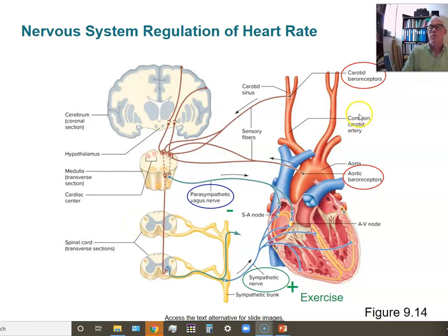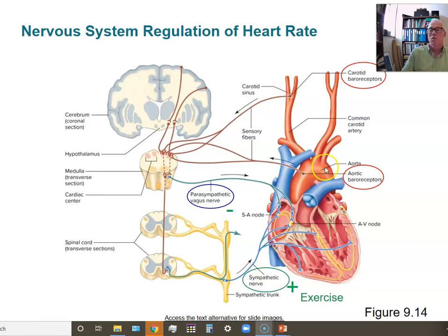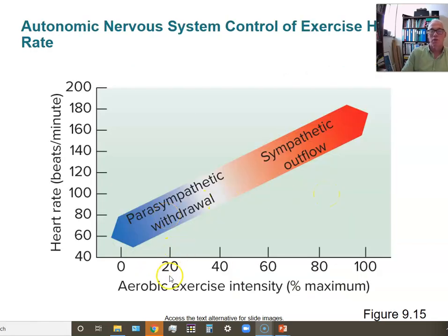There are also pressure receptors to note. In the carotid arteries in your neck, at the fork where they split, there is a pressure sensor called a baroreceptor — analogous to a barometer. This is the carotid sinus. There are also aortic arch baroreceptors in your aorta. These stretch receptors, when they stretch more, presume that blood pressure has gone up and signal to the medulla oblongata to let the pressure down, or vice versa.